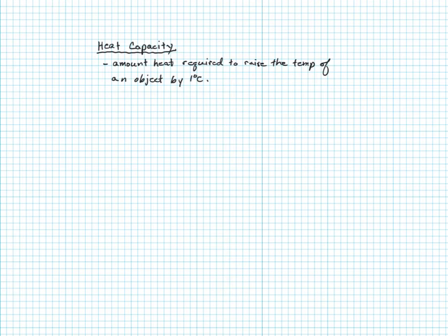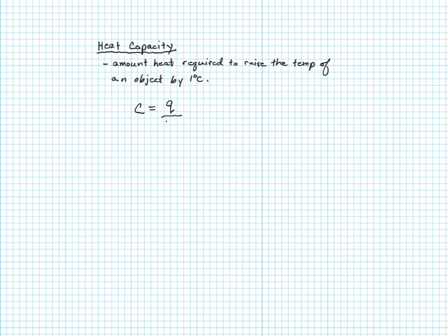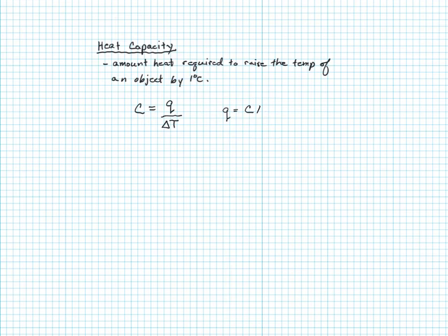We definitely cannot use Fahrenheit as our units. Based on this definition, we can say that the heat capacity for an object is going to be equal to the amount of heat required to cause that object to increase in temperature by some change in temperature. We can rearrange this to calculate for heat: heat is going to be equal to the heat capacity times the change in temperature.